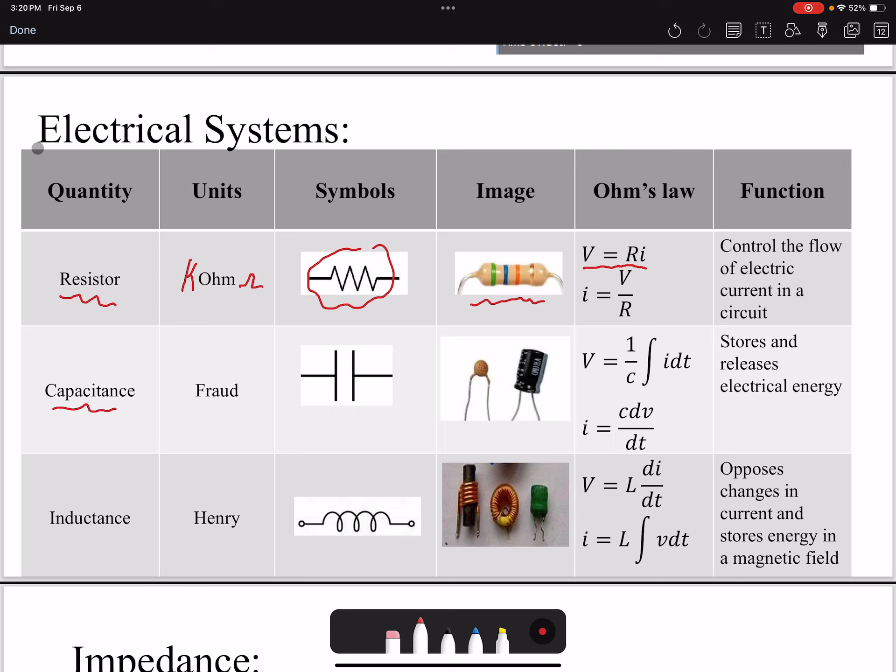Then we have the capacitance. The unit is Farad, or usually it's large so we use micro Farad or nano Farad. That's how we show it in our electrical circuit. These are the actual images of capacitors, and then also the Ohm's law would be V = 1/C integral of i dt. The function is to store and release electrical energy.